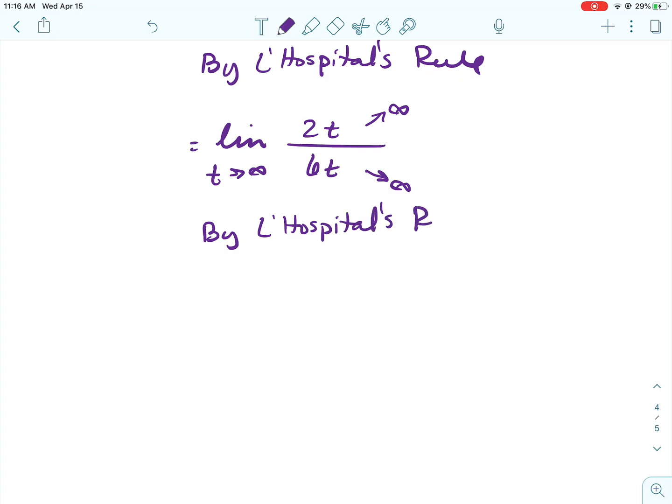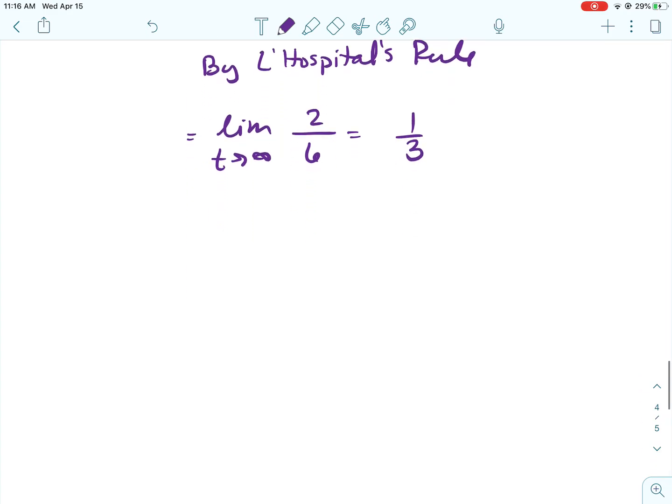So we would just find the derivative of the numerator and the derivative of the denominator. Alright, and again if I put in infinity for our t, we get infinity over infinity, so I can do L'Hopital's rule again.